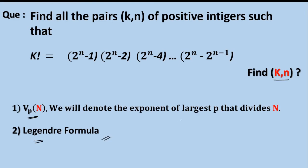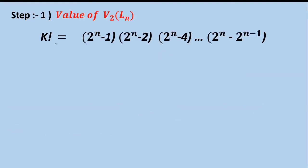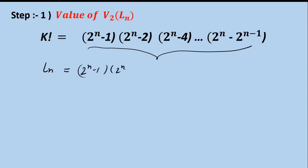Step 1 is calculating the maximum power of 2 that divides capital L(n). Capital L(n) is the right-hand side: 2 raised to the power of (n minus 1), multiplied by 2 raised to the power of (n minus 2), multiplied by 2 raised to the power of (n minus 4), and so on up to 2 raised to the power of (n minus 2 raised to the power of n minus 1).